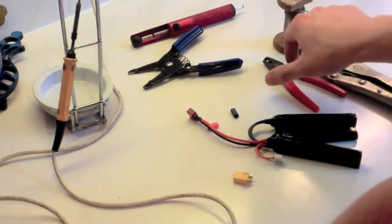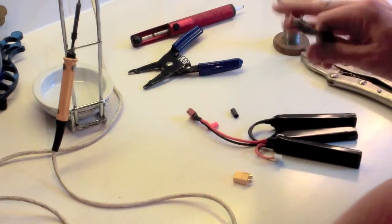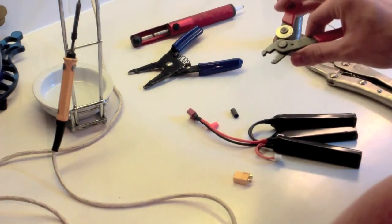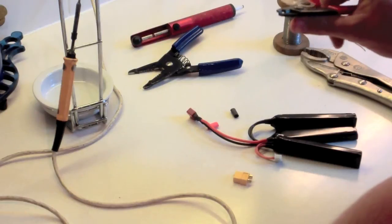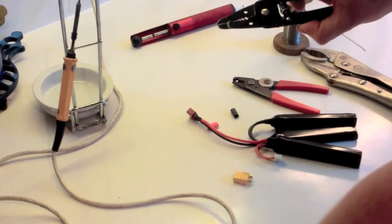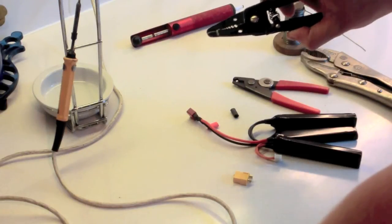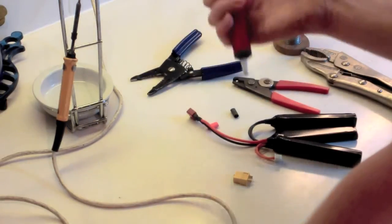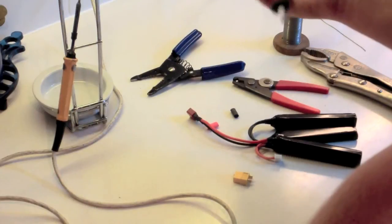You'll also need something to cut the wire with. I'm actually using a combined wire stripper and wire cutter at the moment just because I don't have a pair of wire cutters to hand. Some wire strippers. It's handy if they have a lot of different gauges on them. Maybe a solder sucker. You shouldn't need it but it might be helpful.